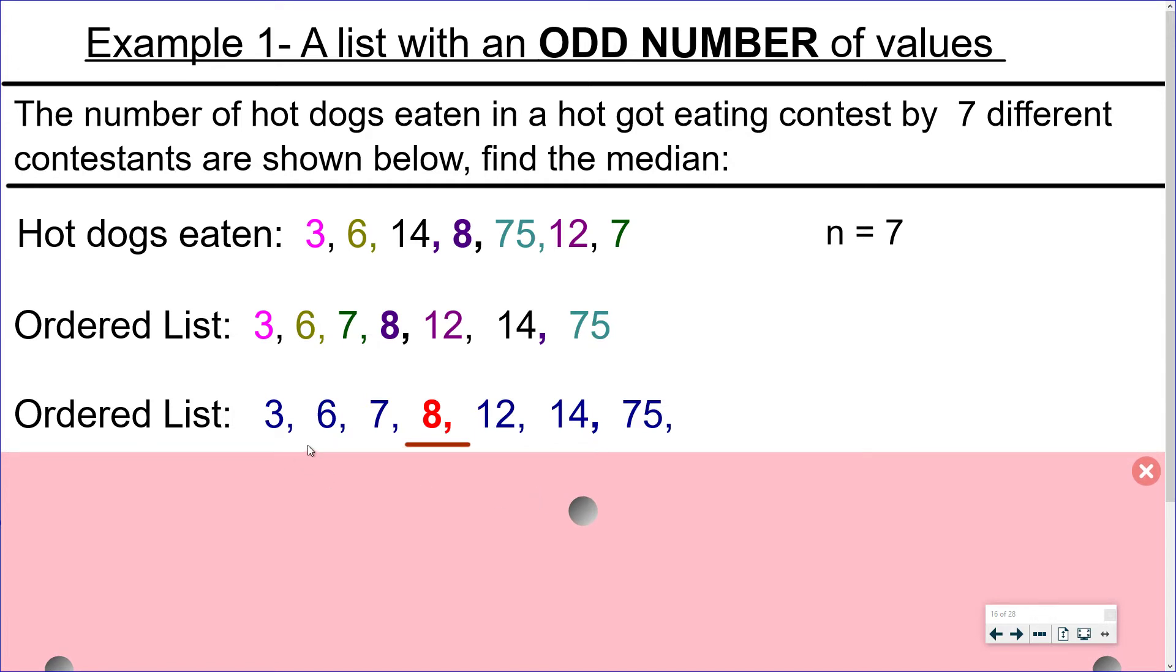So I've written out the list again and if we look at the number eight we can see that it's got three numbers before it and three numbers after it. So we can say that eight is the middle number here and so the median is eight. And we can also see that the presence of this number 75, which is actually the world record for the number of hot dogs eaten in 10 minutes, doesn't have an effect on the median.